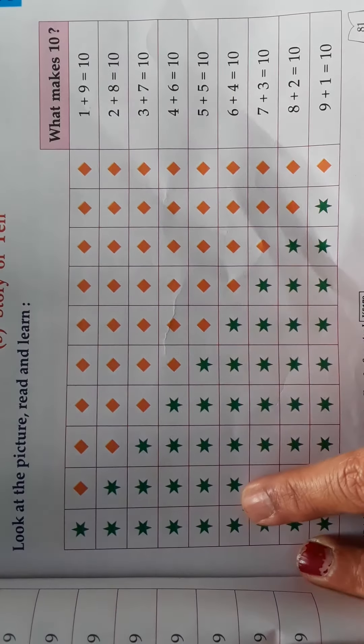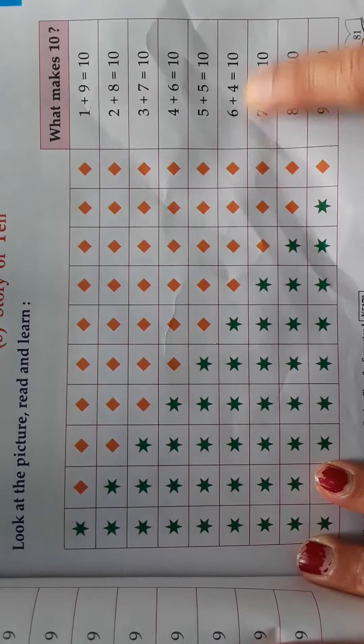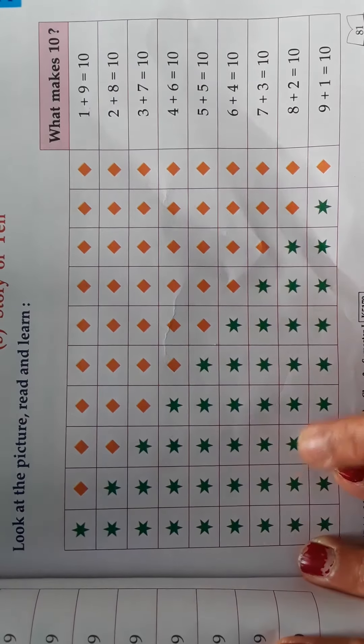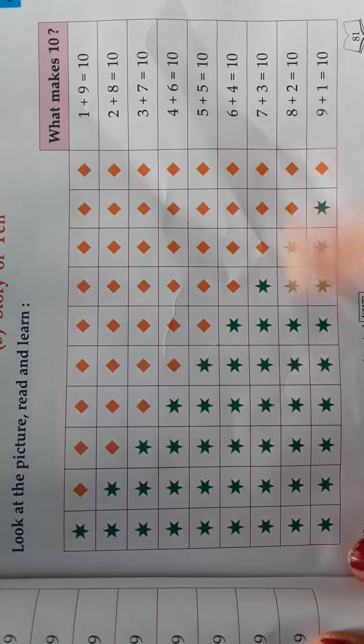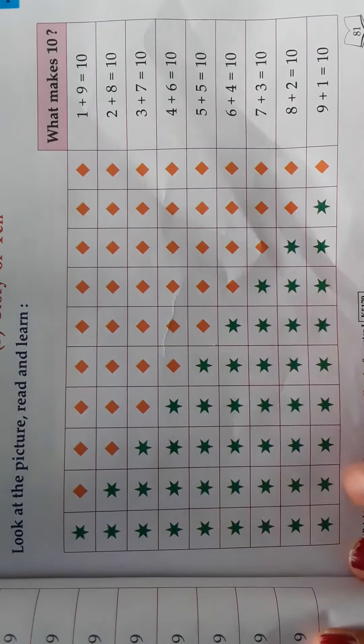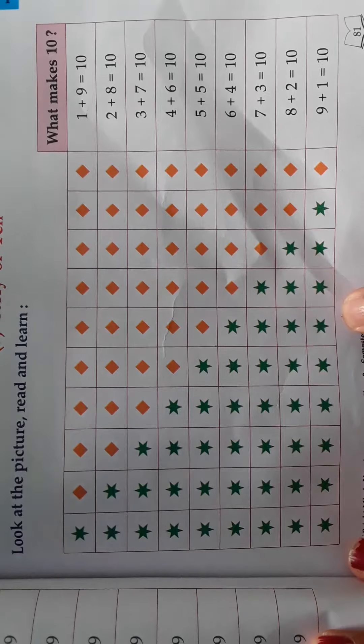makes 10. 6 plus 4 makes 10. 7 plus 3 makes 10. 8 plus 2 makes 10. Count it: 1, 2, 3, 4, 5, 6, 7, 8, 9. 9 plus 1 makes 10. OK, 9 stars